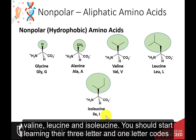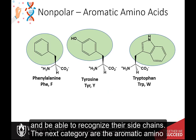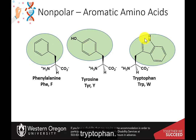You should start learning their three-letter and one-letter codes and be able to recognize their side chains. The next category are the aromatic amino acids. They contain the phenyl ring structure. These include phenylalanine, tyrosine, and tryptophan.